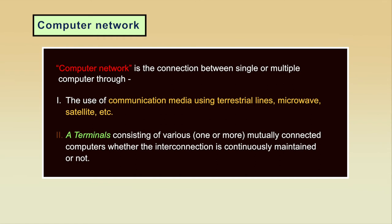Computer network, as defined in the IT Act, is the connection between single or multiple computers through the use of communication media using terrestrial lines, microwave, satellite, etc. Two or more computers connected by any means form a computer network. A terminal consists of one or more mutually connected computers, whether the interconnection is continuously maintained or not. Computer network is a connection of single or multiple terminals, interconnected continuously or non-continuously.